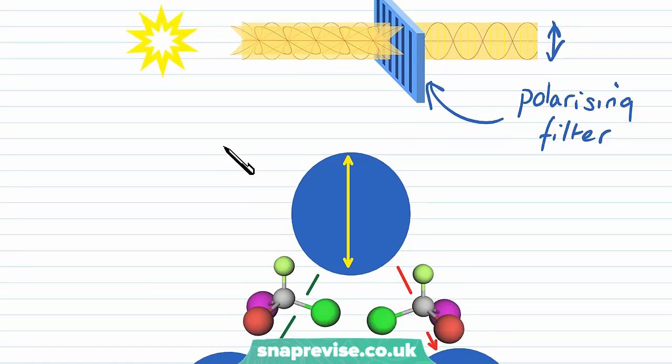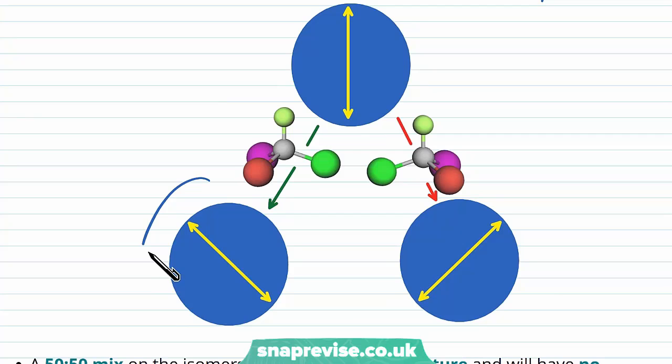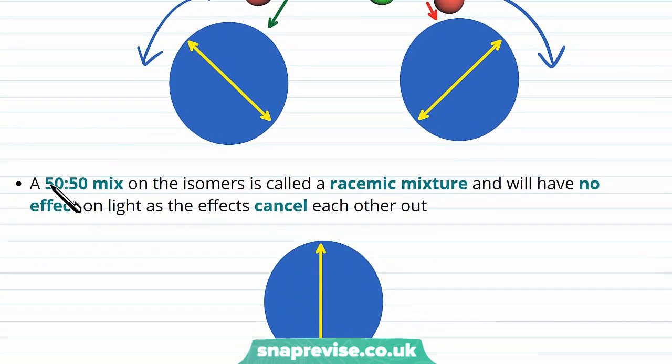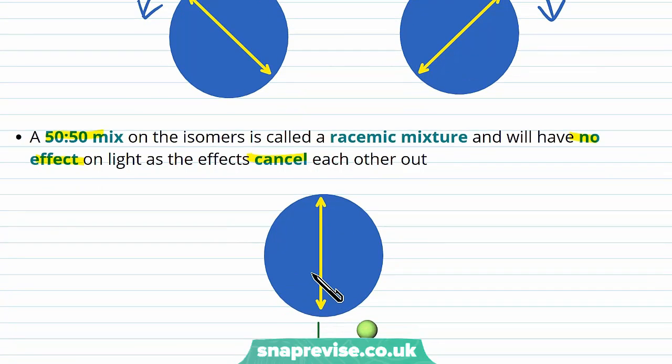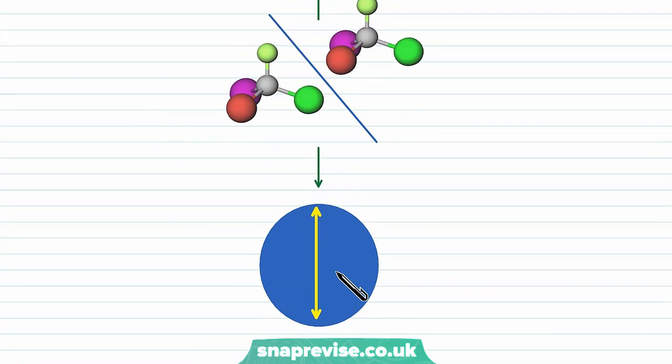Now, if we take this polarized light and pass it through our samples of the different isomers, one of them is going to rotate it anti-clockwise, and one of them is going to rotate it clockwise. An interesting effect of this is if we have a 50-50 mix, where we have equal amounts of each of the isomers, then the effects will cancel each other out, and the light will not be rotated at all. It will pass through unhindered. We call this type of mixture, where it's 50-50, a racemic mixture. So if we passed plane polarized light through an even mix, we would not see any effect.